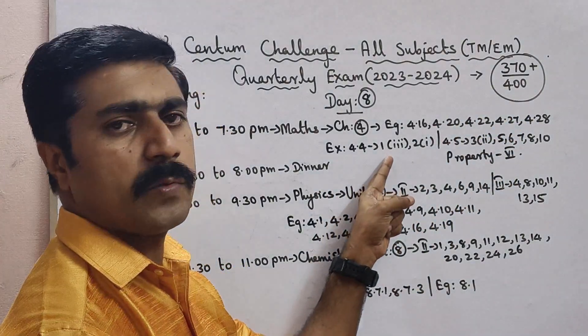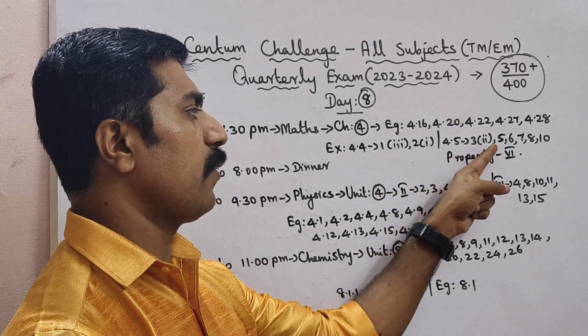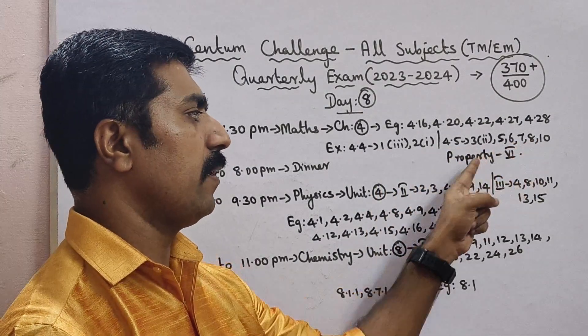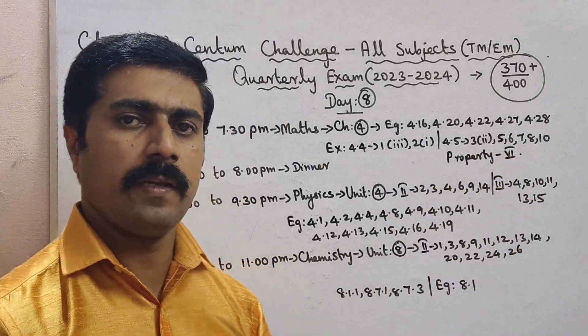Exercise 4.4 problems 1, 2, 1; Exercise 4.5 problems 3, 2, 5, 6, 7, 8, 10. Property 6th property is included.